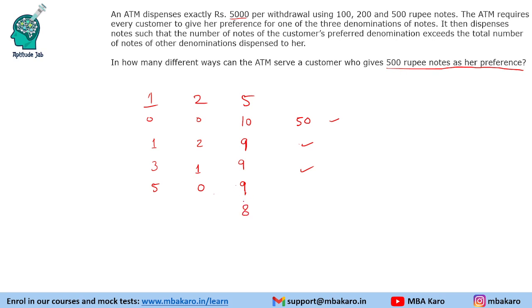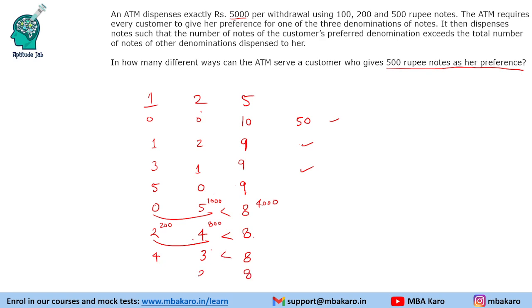Next, consider 8 notes of 500. With 8 notes of 500, that is ₹4000, and we need ₹1000 more. We can give 5 notes of 200 — total other notes is 5, which is less than 8, so that works. If we reduce to 3 notes of 200, we need 4 notes of 100; total other notes is 7, still less than 8 — satisfied. But if we reduce to 2 notes of 200, we need 6 notes of 100; total other notes equals 8, which is not strictly exceeding — so this case fails.